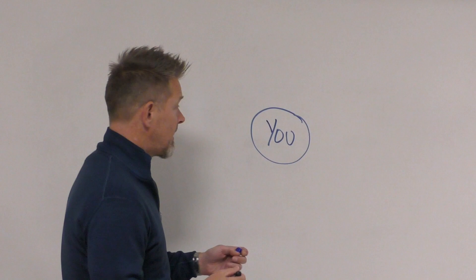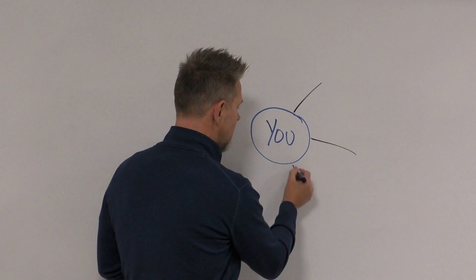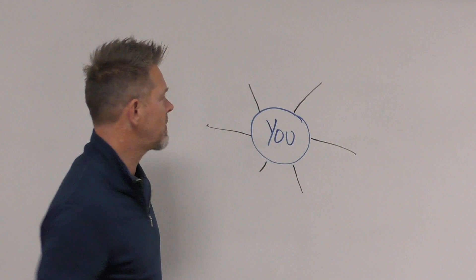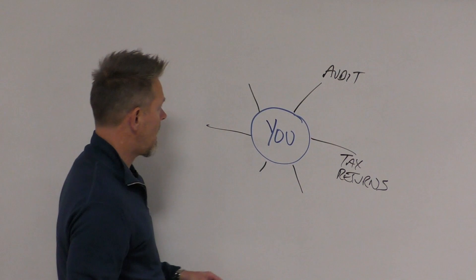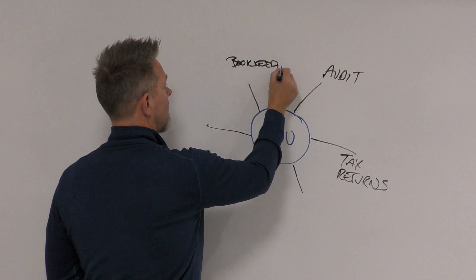So here's the thing, here's you, and I want you to figure out what are all the services, what are all the types of services you could provide clients, what are all those things that you could do? So here's some audit over here. Here's tax returns, personal ones, personal tax returns. Over here, let's do some bookkeeping. There's bookkeeping over here.